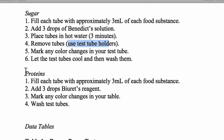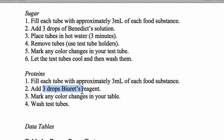The final test we're going to run is the test for the presence of proteins. We're going to use biuret reagent — again we start with three mils of each food substance, add three drops of biuret, and then mark any color changes. Notice that the only thing we're going to heat is Benedict's solution. We're not going to heat iodine — that would be really bad — and we're not going to heat biuret. We certainly don't have to heat brown paper.